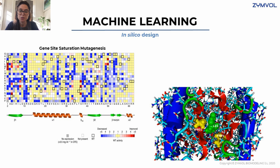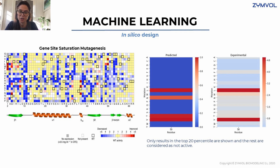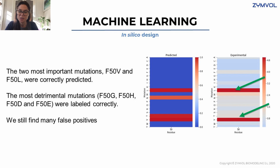We are trying to replicate this experimental data using machine learning. We used 80% of the data as a training set and 20% as a validation test. The results I'm showing next are blind tests carried out on residue number 50, which shows improved properties. You can see the predicted results on the left and the experimental data on the right — we have been able to predict the two best improvements. However, we still have limitations: we are also predicting some mutations that are not actually good. There's still room for improvement, but we are already doing very well at identifying mutations that do not lead to improvement, reducing the number of variants worth testing in the lab.